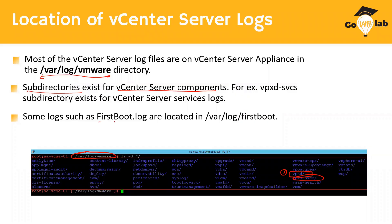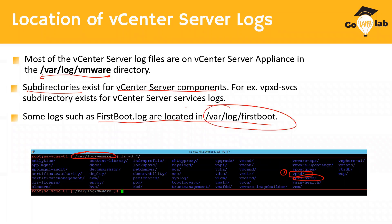The first boot logs are located in /var/log/firstboot. When installing the vCenter Server appliance, you might encounter issues during the installation itself — maybe a particular RPM is not installed or the installation has failed. In that case, vpxd is not the right place to look, because vpxd only comes into picture once vCenter Server is installed successfully and all services are running. For issues during installation itself, /var/log/firstboot is the folder you should be looking at.